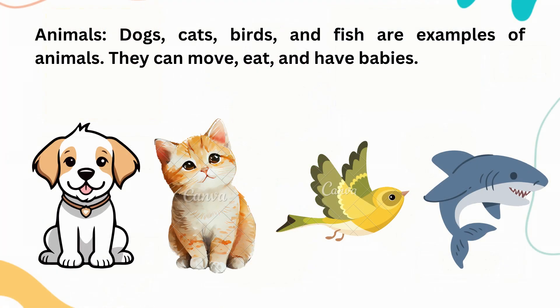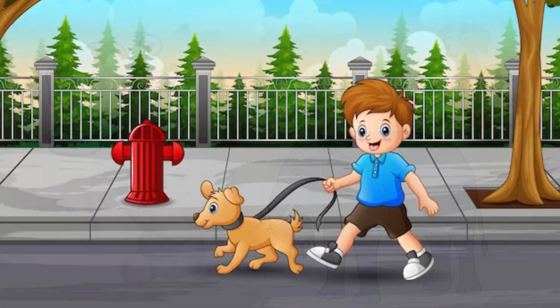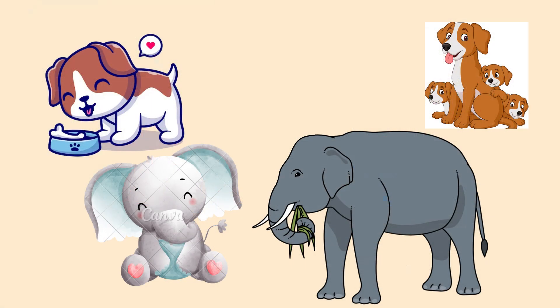Animals: Dogs, cats, birds, and fish are examples of animals. They can move, eat, and have babies.